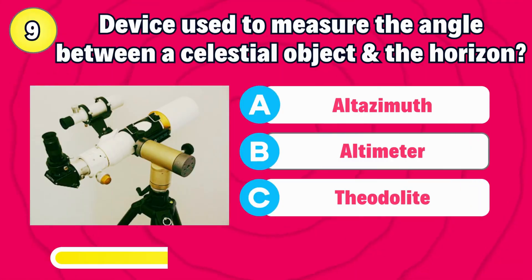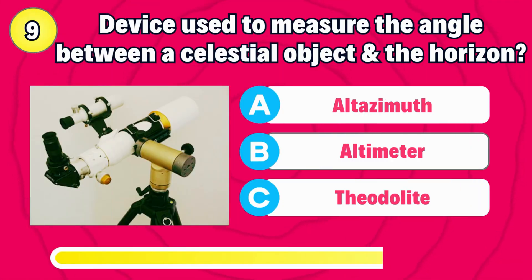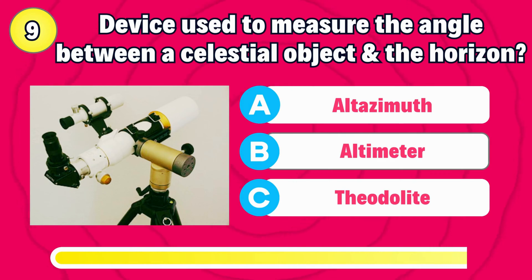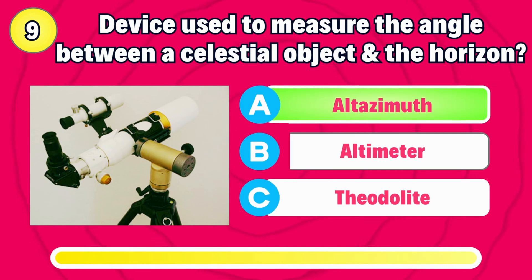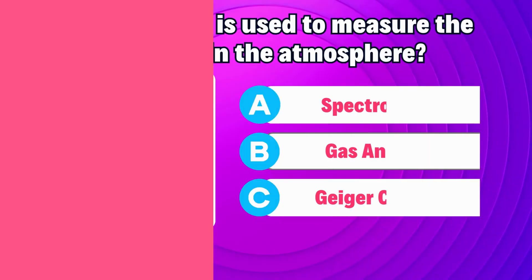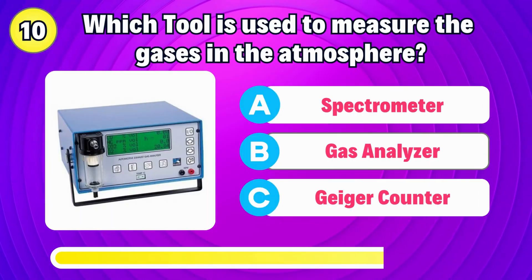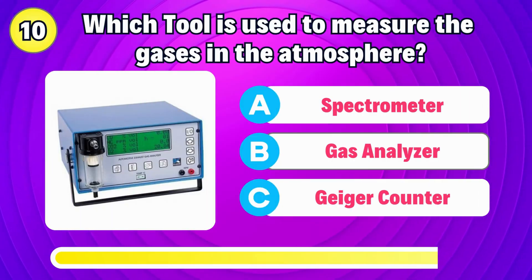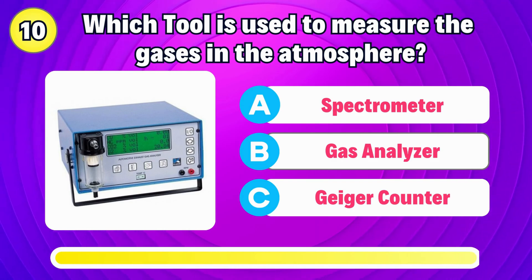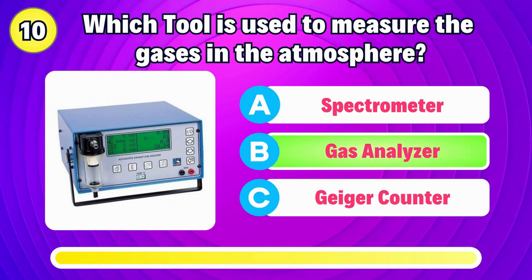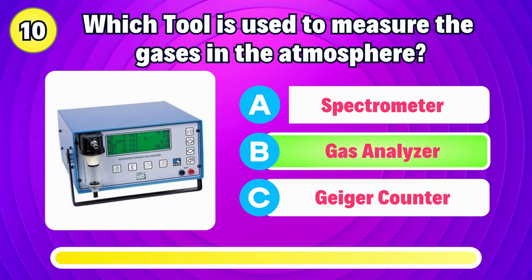What instrument is used to measure the angle between a celestial object and the horizon? Correct, it's altasmith. Which tool is used to measure the concentration of gases in the atmosphere? Answer is gas analyzer.